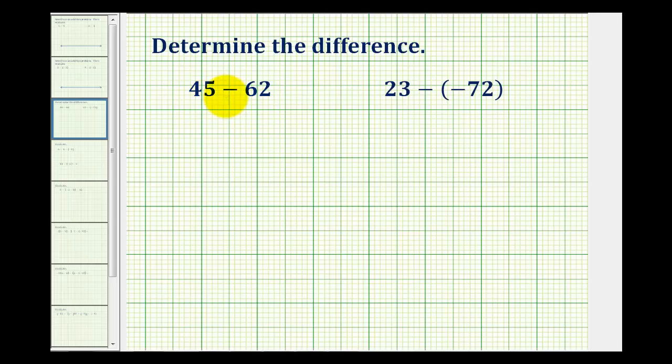So for 45 minus positive 62, we can write this as 45 plus negative 62. Subtracting positive 62 is the same as adding negative 62.